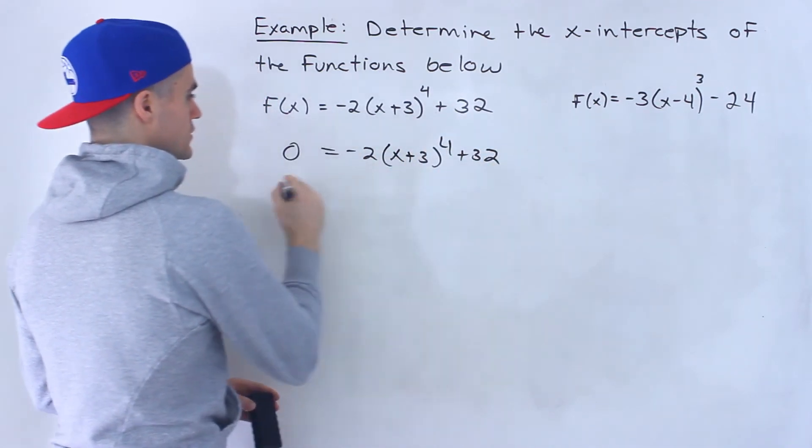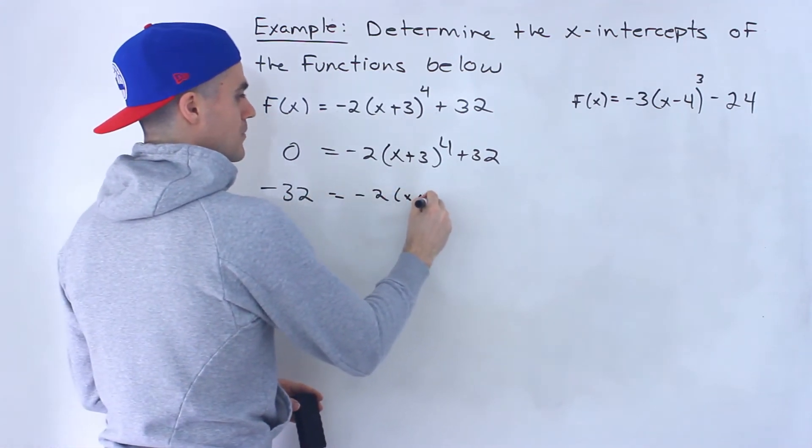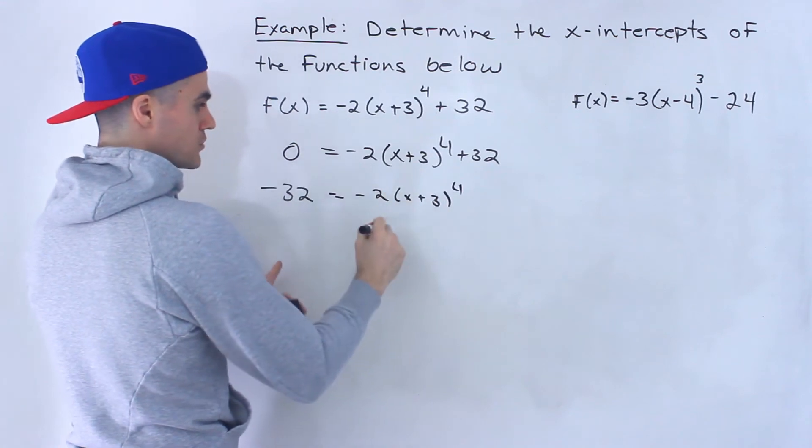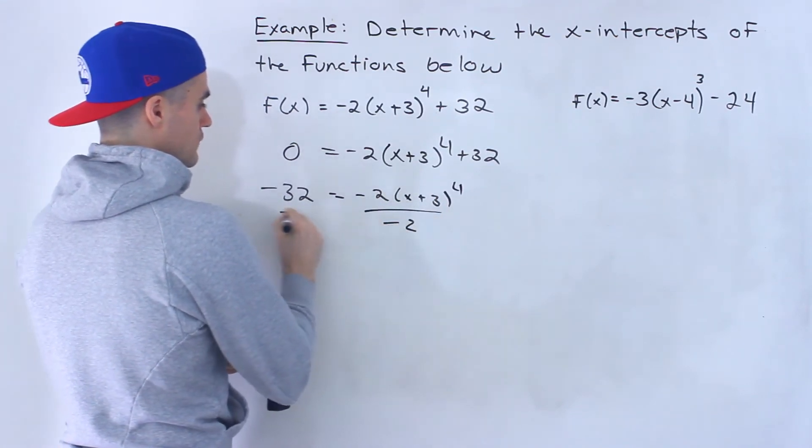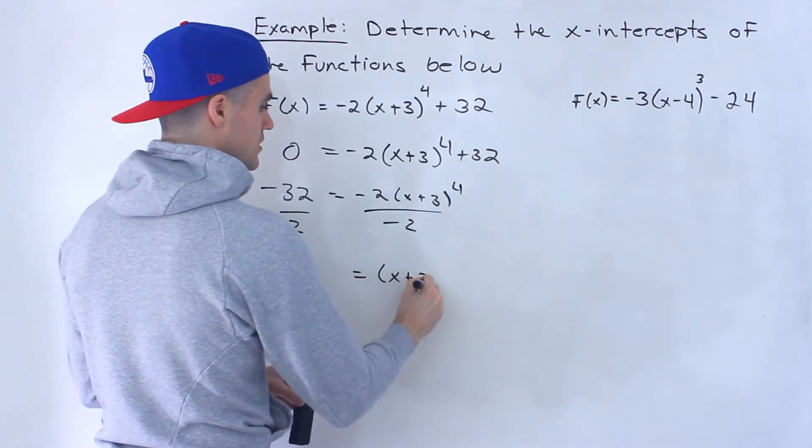So the way we would do that, bring the 32 over and be negative 32, we got -2(x+3)^4. Divide both sides by negative 2 to get rid of this negative 2 in front. So we'd have 16 = (x+3)^4.